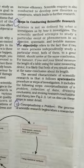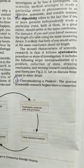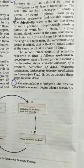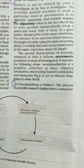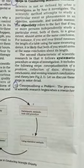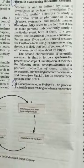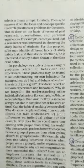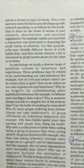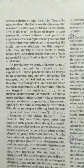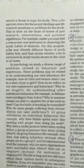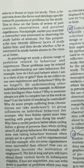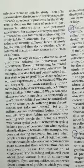It has to be done in a systematic procedure. Under systematic procedure, the first step is conceptualizing a problem. It means a researcher — one who is doing the research — selects a theme or a topic for study. After selecting the topic, he tries to develop questions or problems for study. This is done on the basis of the review of past research, observation, and personal experiences. In psychology, we not only study about a particular behavior but a diverse range of problems related to human behavior.